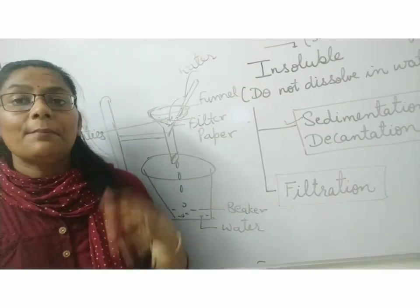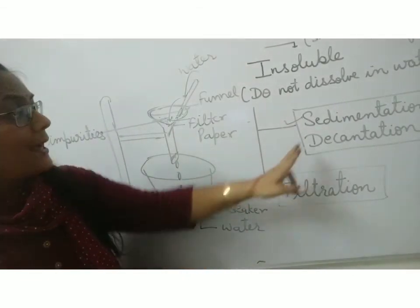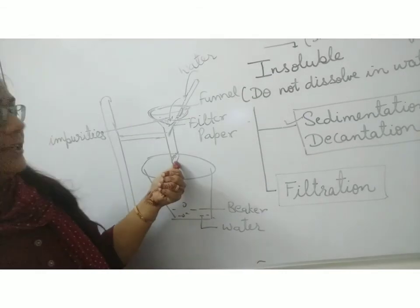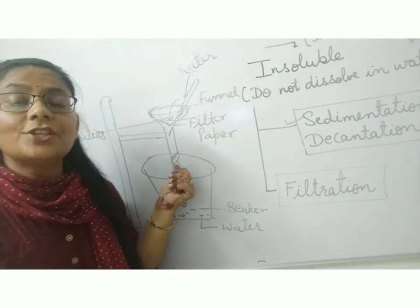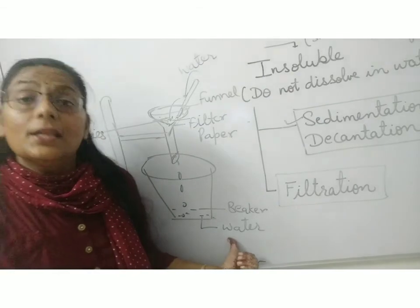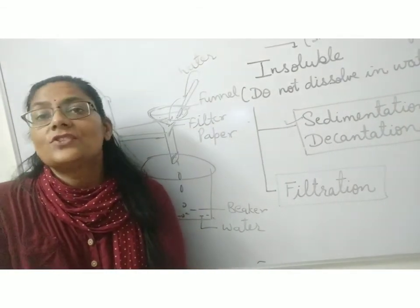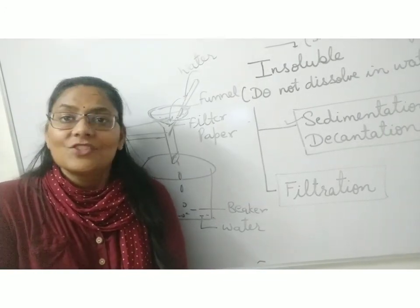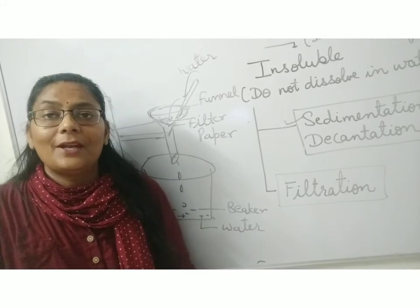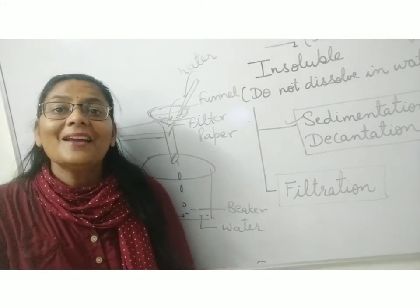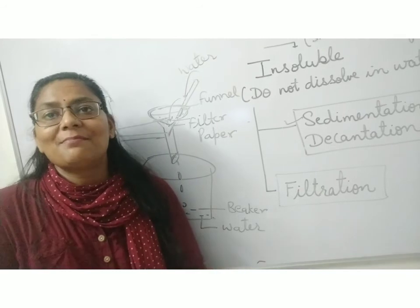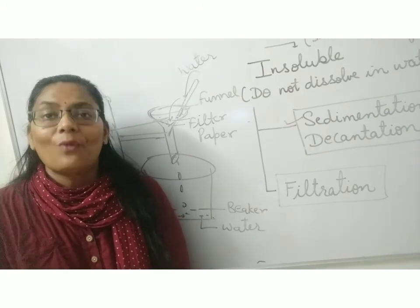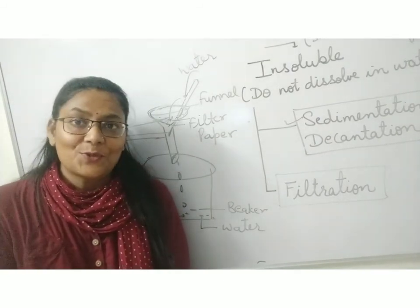The impurities which we are not able to separate by sedimentation and decantation — that water is filtered by filtration to get clear water. Still, we have some impurities which cannot be separated by these physical methods, and that is germs. Germs present in water can be separated by boiling. Boiling is the best method to remove germs. I think you understood how to purify water by different methods. Thank you so much.